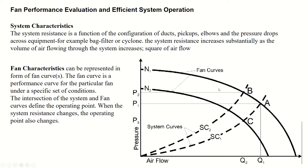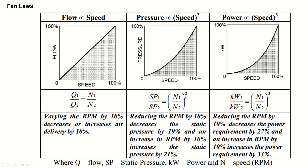We can find operating points using these fan curves and system curves. This diagram also shows the fan laws. The first law states that flow is directly proportional to speed — as RPM increases, air delivery increases in a linear relationship.